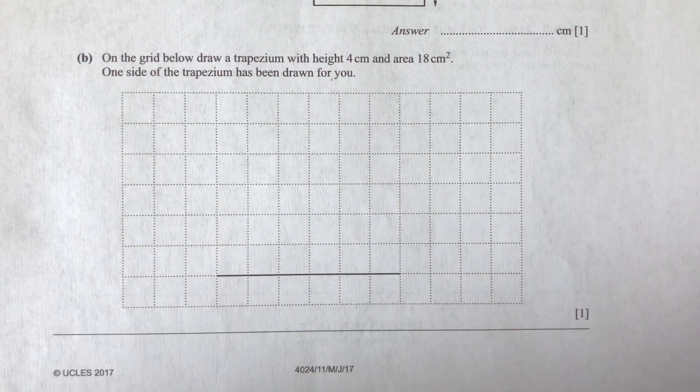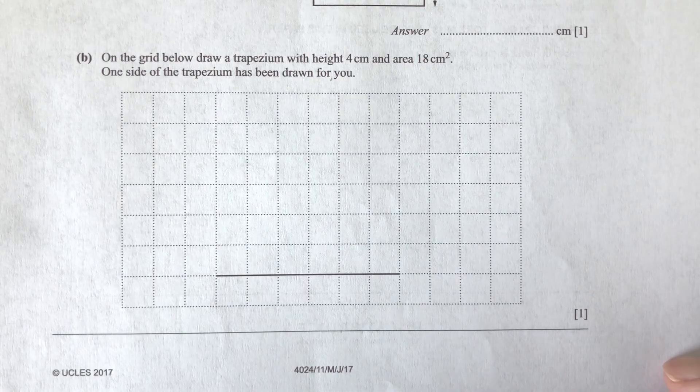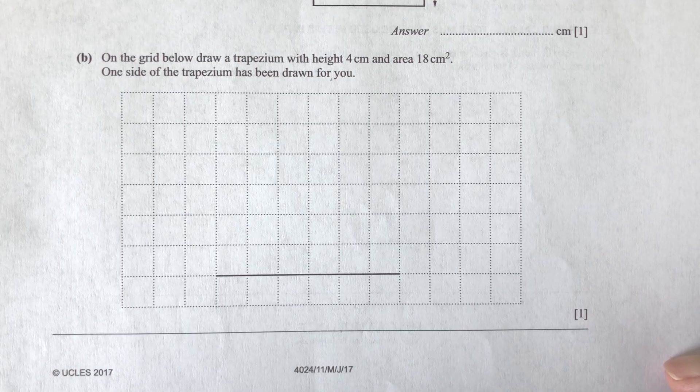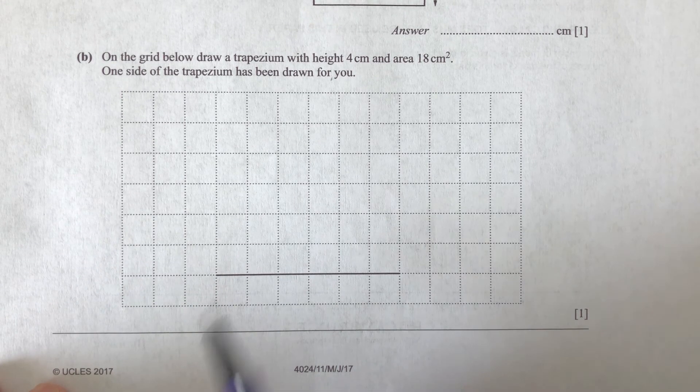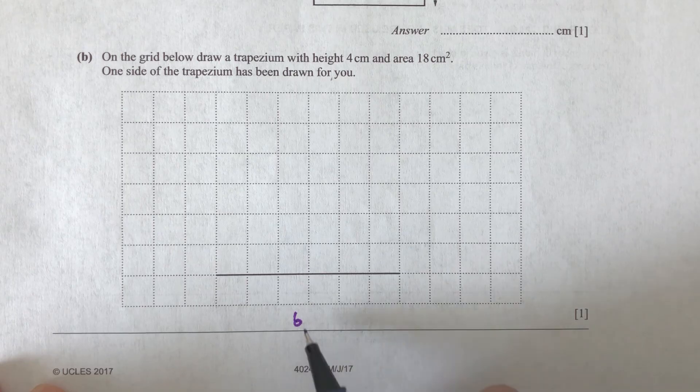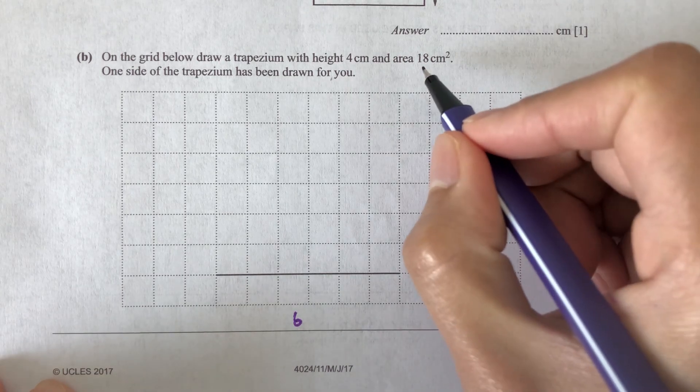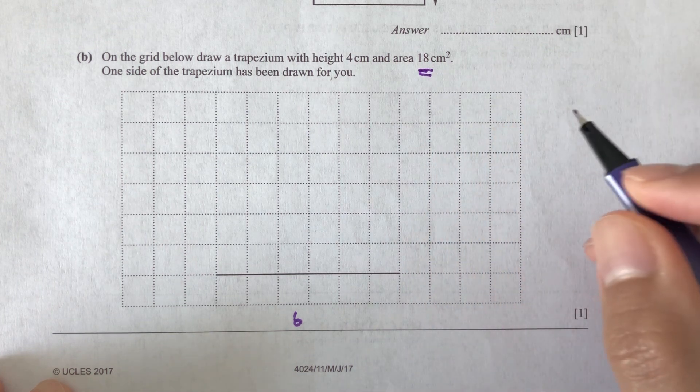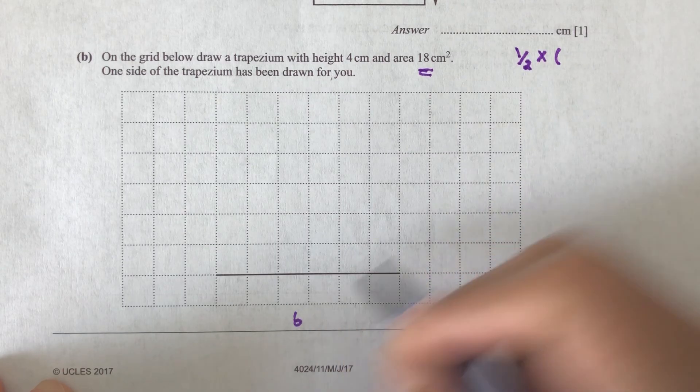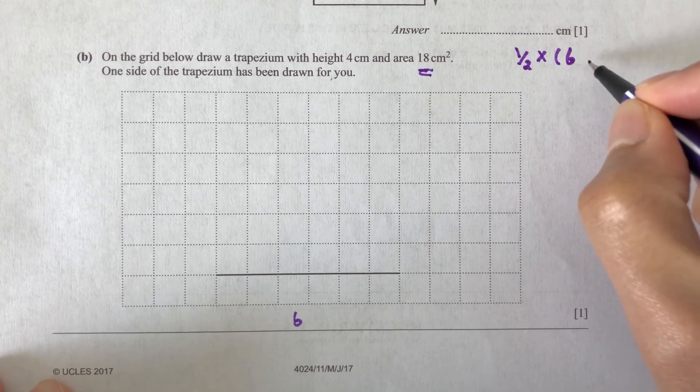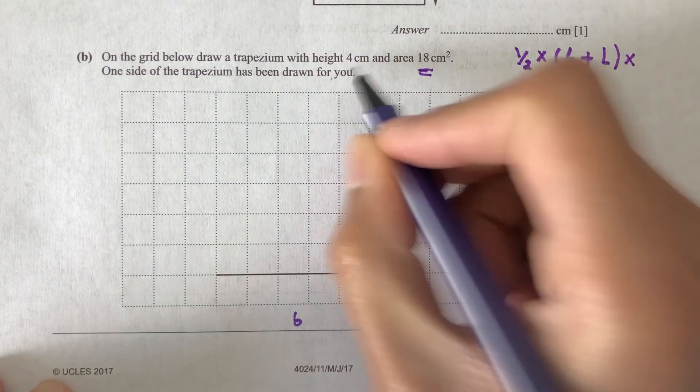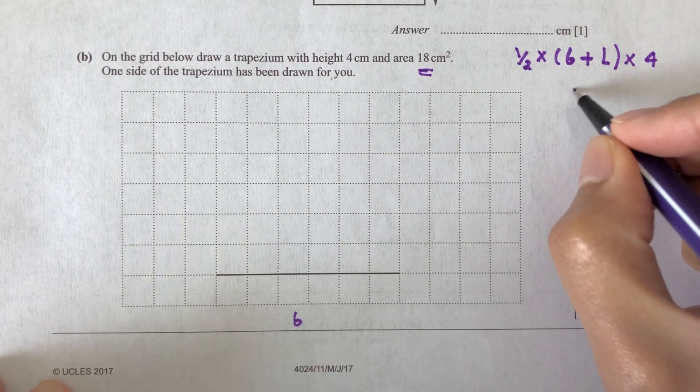Part B. On the grid below, draw a trapezium with a height of 4 centimeters and an area of 18 centimeters square. One side of the trapezium has been drawn for you. So what is this side length? 1, 2, 3, 4, 5, 6. So 6, right? The length of this side. So we are given the area of the trapezium. So how do we find the area? Usually we have to do half times the sum of both sides. So we have one side, which is 6, plus, let's call the other side L, and then times the height in between, which is 4.